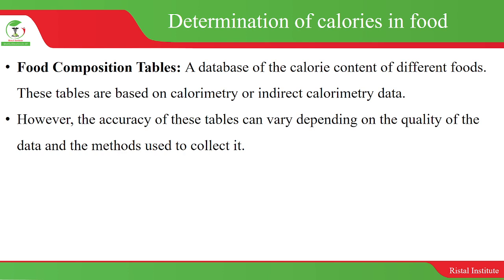We can also use food composition tables — this is a database of the calorie content of different foods. These tables are based on calorimetry, direct or indirect, data. However, the accuracy of these tables can vary depending on the quality of the data and the methods used to collect it.